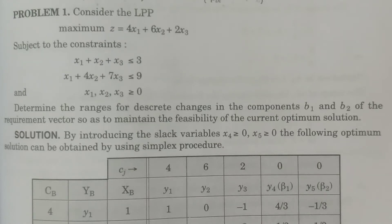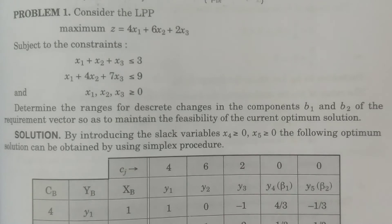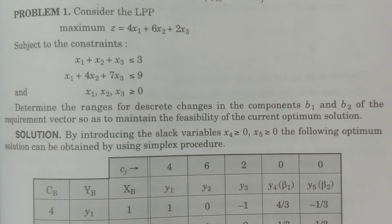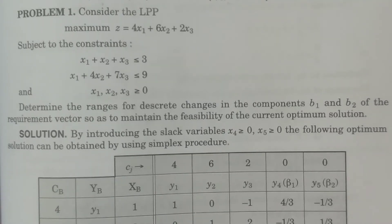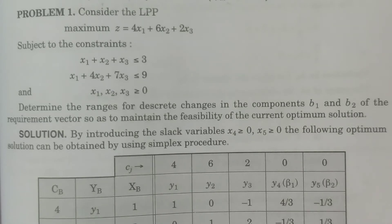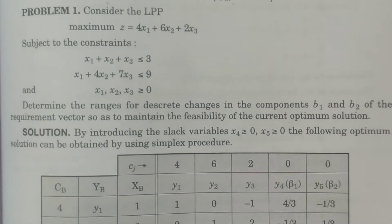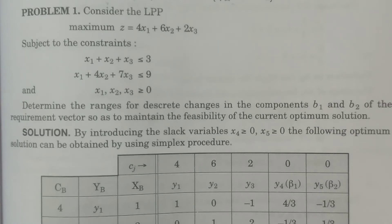Welcome to BSc Statistics students. In this class I explain one of the problems in the changes in the right hand side constants in the post-optimal analysis. If the right hand side constant changes, then how to maintain the optimality condition is going to be discussed here without changing the optimality condition, and how the discrete changes in the components of the right hand side constants are studied.